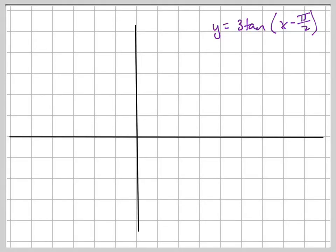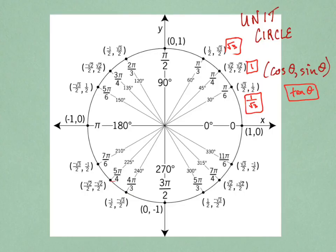Alright, the graph for y equals 3 tan of x minus pi over 2. With tangent graphs, they're actually simpler to graph than sine and cosine because there are fewer points to worry about. Basically, with a tangent graph, think of your unit circle — your tangent values are going to be 1 over root 3 (which is root 3 over 3), 1, or root 3.